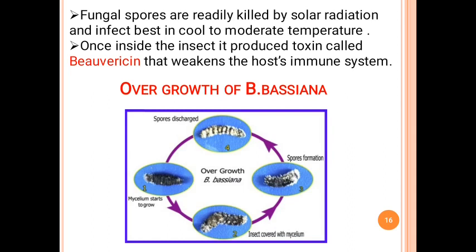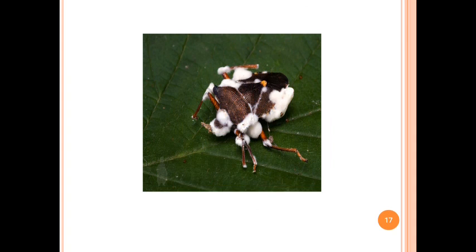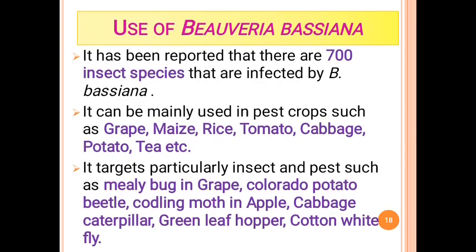Here is the growth cycle of Beauveria bassiana: first, mycelial growth on the insect body, then multiplication and spore formation on the insect, with mycelial growth spreading all over the body. This shows the mycelial growth of Beauveria bassiana on the insect body.